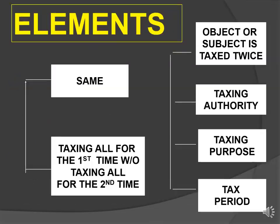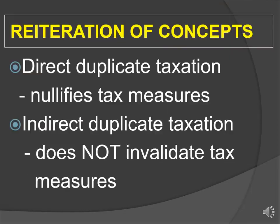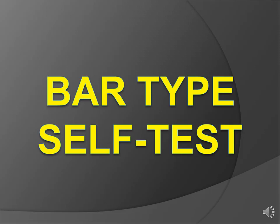Recall the explanation. The element of direct duplicate taxation that matters is specifically the second element, because the second element is the one that causes the discrimination. All are treated in the same manner during the first instance, but during the second instance, without showing any valid reason, some are treated differently — some are no longer subject to tax. To repeat: direct duplicate taxation nullifies tax measures because of violation of the Equal Protection Clause. Indirect duplicate does not invalidate tax measures because there is no violation of the Equal Protection Clause.